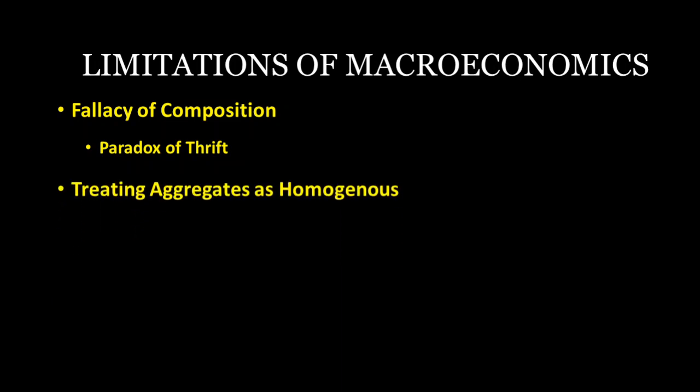Number two is treating aggregates as homogeneous, which is not true. The main defect of macroeconomic analysis is that it regards aggregates as homogeneous, without caring about their internal composition and structure.